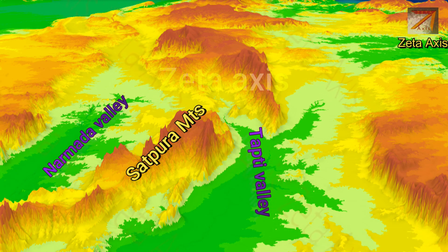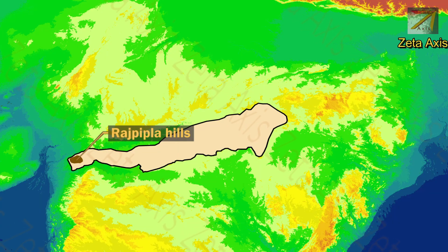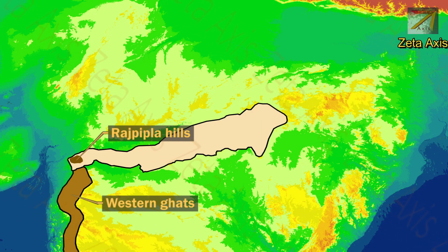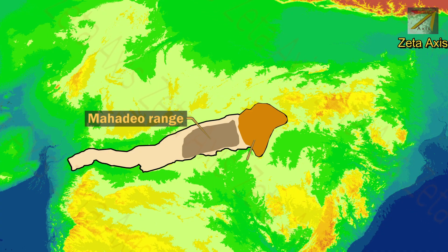The Narmada and Tapti rivers flow in these rift valleys. The western part of the Satpura range in Gujarat is called Rajpipla hills, where Satpura ranges meet the Western Ghats. The central section of the Satpura range is formed by Mahadeo hills, while the eastern part of the Satpura range is called Maikal range.